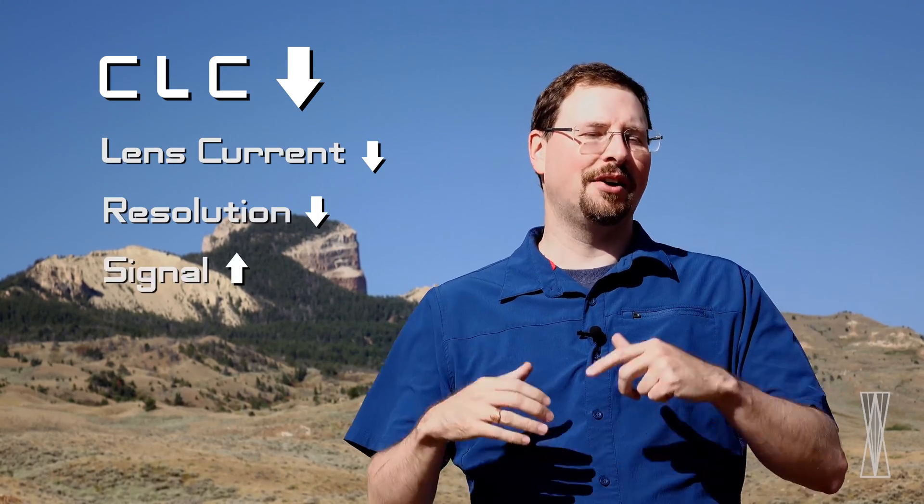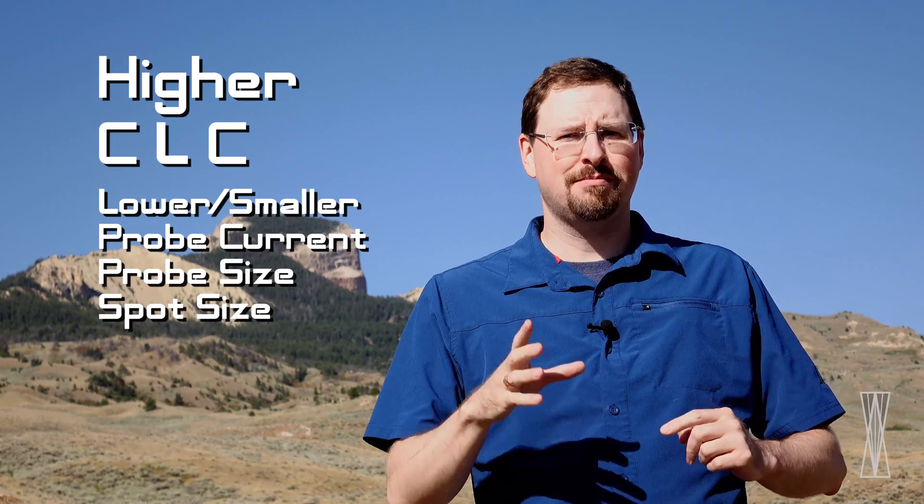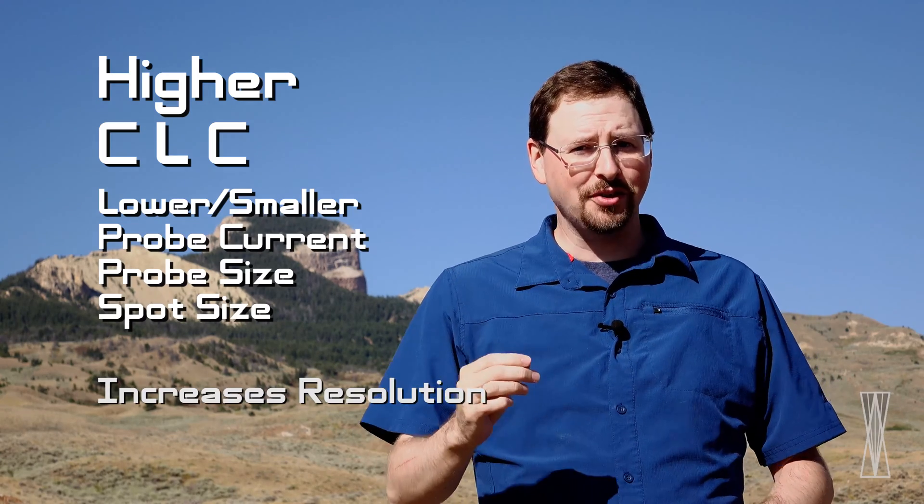Turning it down meant the lens current went down, the resolution went down, and the signal went up. Nowadays, most microscope manufacturers will label this control not as CLC but as spot size, probe size, or probe current. This label is the inverse, or opposite, of the condenser lens current. A control that says condenser lens current tells you what you're changing; a control that says probe current or spot size tells you the result you get from changing that control. For example, turning down the condenser lens current allows more electrons down the column, giving you a larger probe current or larger spot size. So to recap: a higher condenser lens current, which is a lower or smaller probe current, probe size, or spot size, will give you better resolution but lower signal.